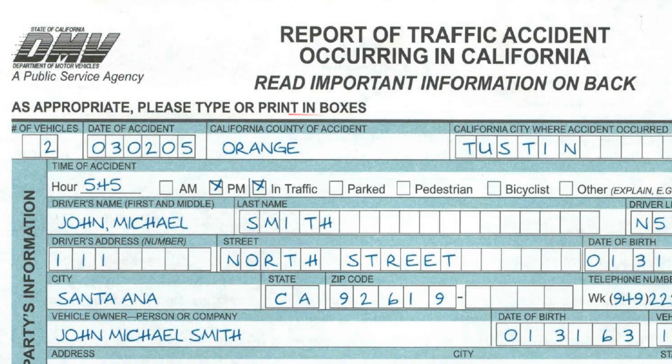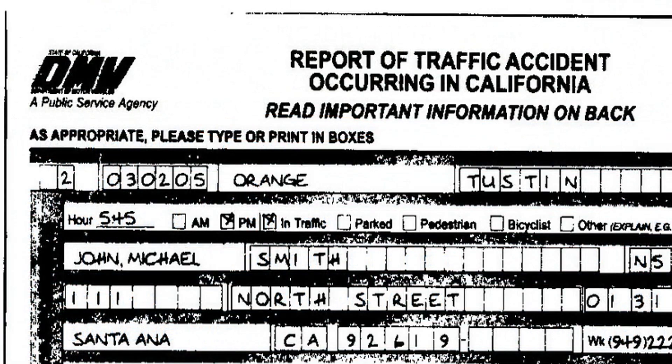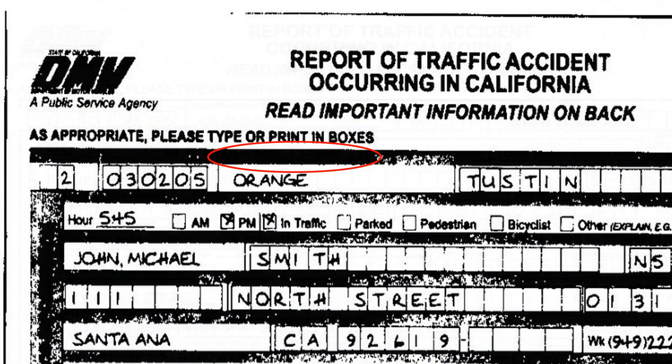Please concentrate on the green background and the text above it stating 'California county of accident.' If a standard scanning software has been used, the results would look like this image — not a chance to read anything, as conversion to black and white will completely make the background black. How to avoid this and get an excellent image?